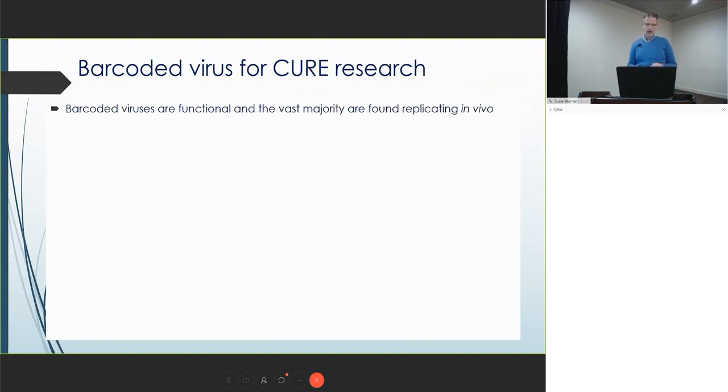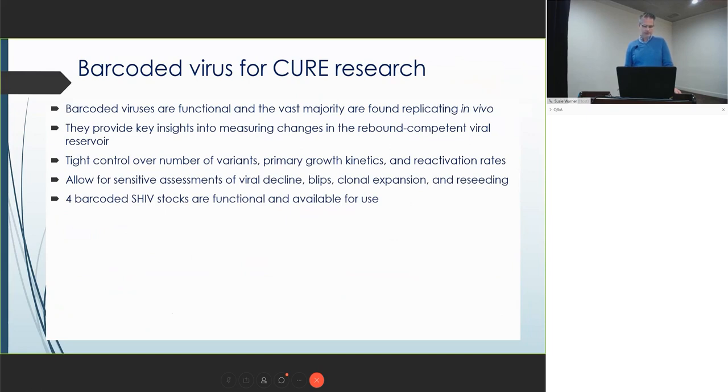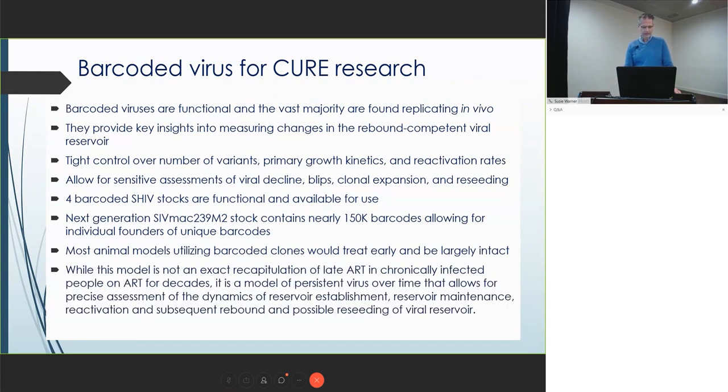So barcoded viruses for cure. The vast majority of these barcoded viruses in the first stock are replication-competent in vivo. They provide key insights into measuring changes in the rebound-competent reservoir. There's tight control over the number of variants, the primary growth kinetics, and the reactivation rate. It allows for a sensitive assessment of viral decline, blips, clonal expansion, and reseeding. There are four barcoded SHIV stocks that are functional and available for use. Next-generation M2 stocks have 150,000 barcodes and are available for use. Most animals utilizing barcoded clones would likely be treated early and have intact viruses. While this model is not an exact recapitulation of late ART in chronically infected people on ART for decades, it is a model of persistent virus over time.